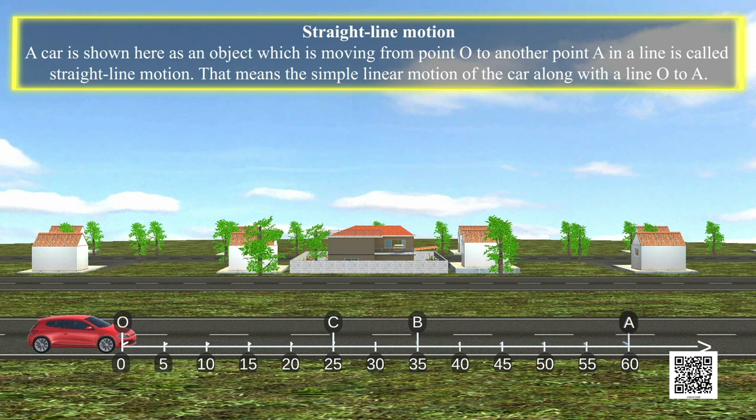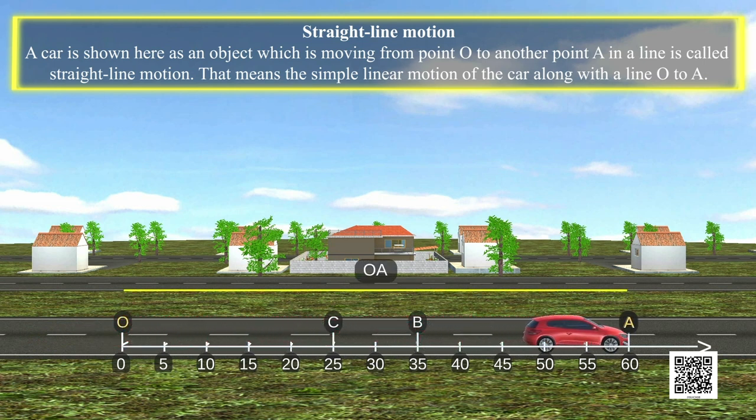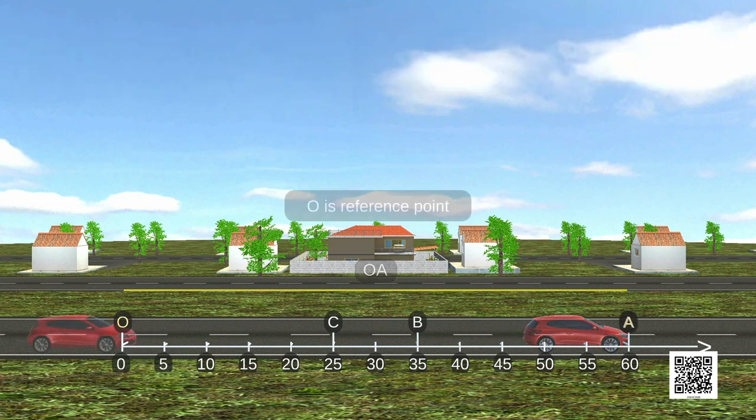Straight Line Motion: A car is shown here as an object which is moving from point O to another point A in a line is called Straight Line Motion. That means the simple linear motion of the car along a line O to A.